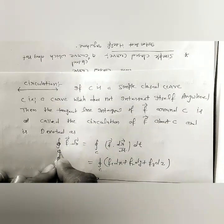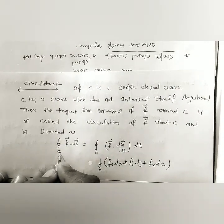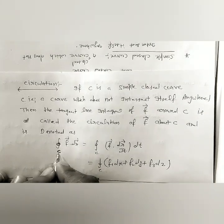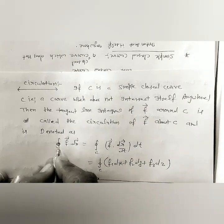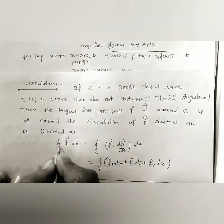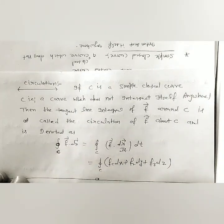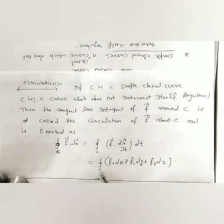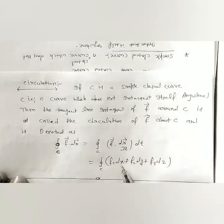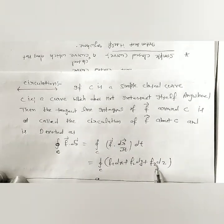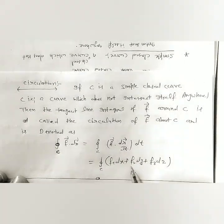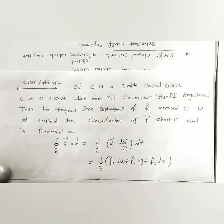The circulation symbol is used when the curve c is a simple closed curve. The circulation can be written as the closed integral of f dot dr by dt, which can also be written as f1 dx plus f2 dy plus f3 dz. This notation and form were discussed in the previous topic.